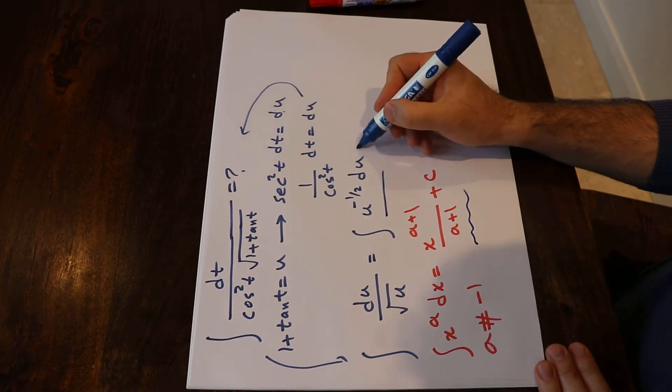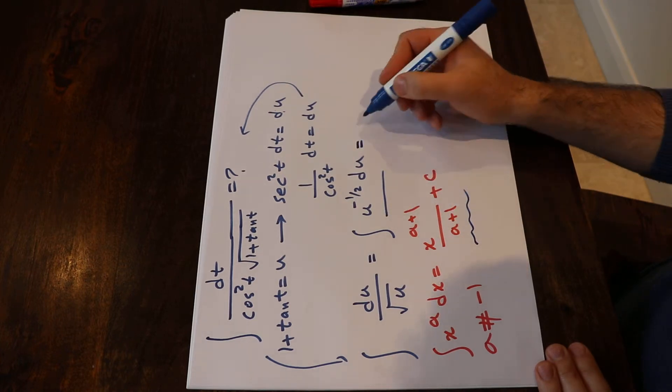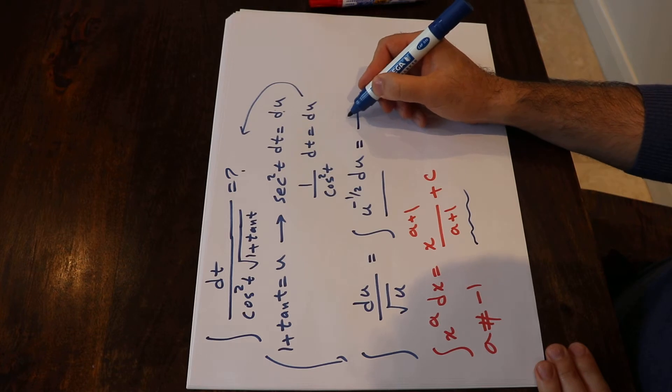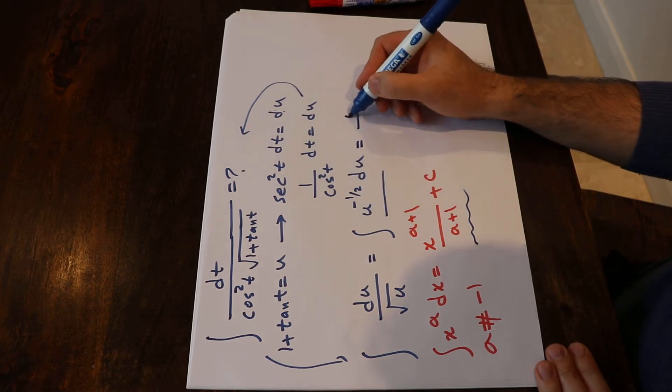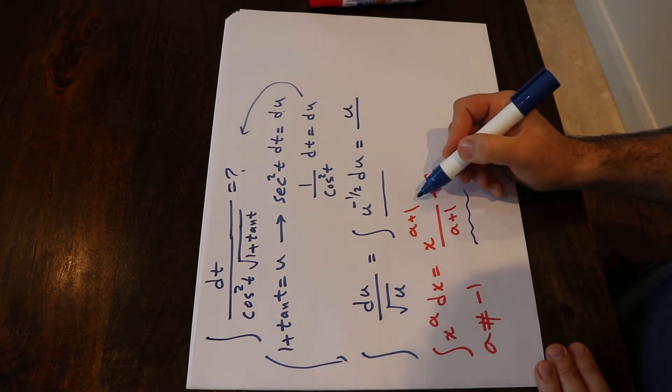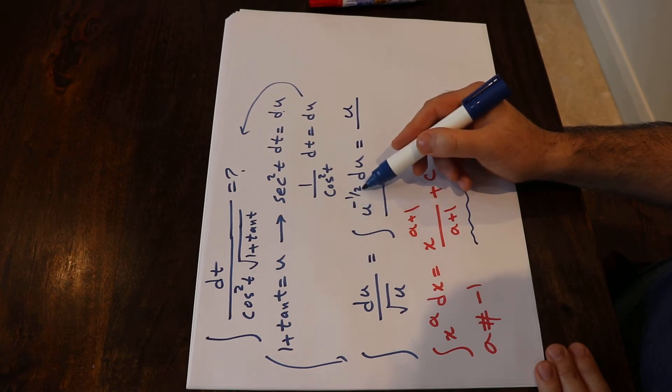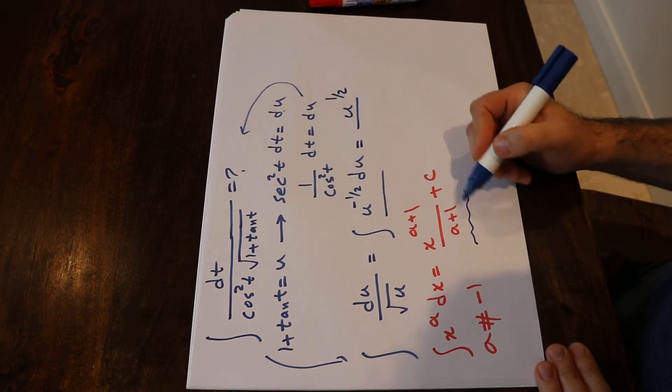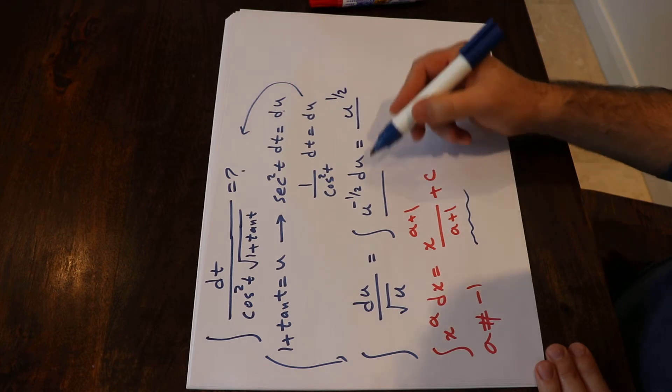That means I can use this solution to solve my integral, which will be equal to u, that is x in this case, with the power of a plus 1, that is minus 1 divided by 2 plus 1 which will be equal to 1 divided by 2, divided by a plus 1 which is 1 divided by 2, plus c.